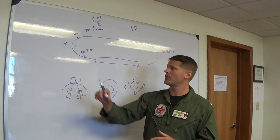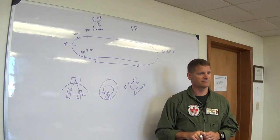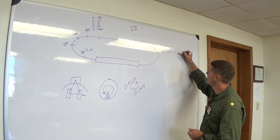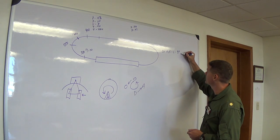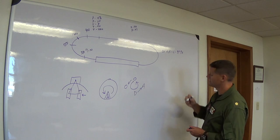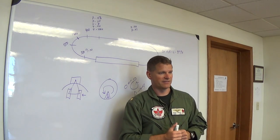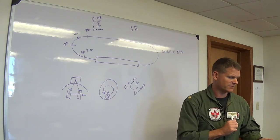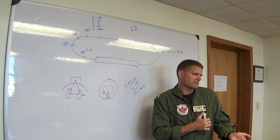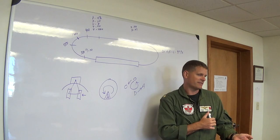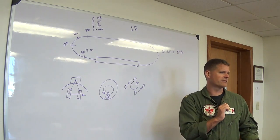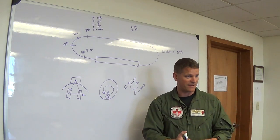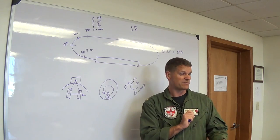What are you going to do with your controls to get back on profile at the 90? Add a little bit of power and a little bit of back stick — add power and raise the nose at the same time. Why do them simultaneously? If you only add power, you'll increase descent rate and airspeed. If you only pull up on the nose, you'll decrease descent rate but also decrease airspeed. So you must do them at the same time.